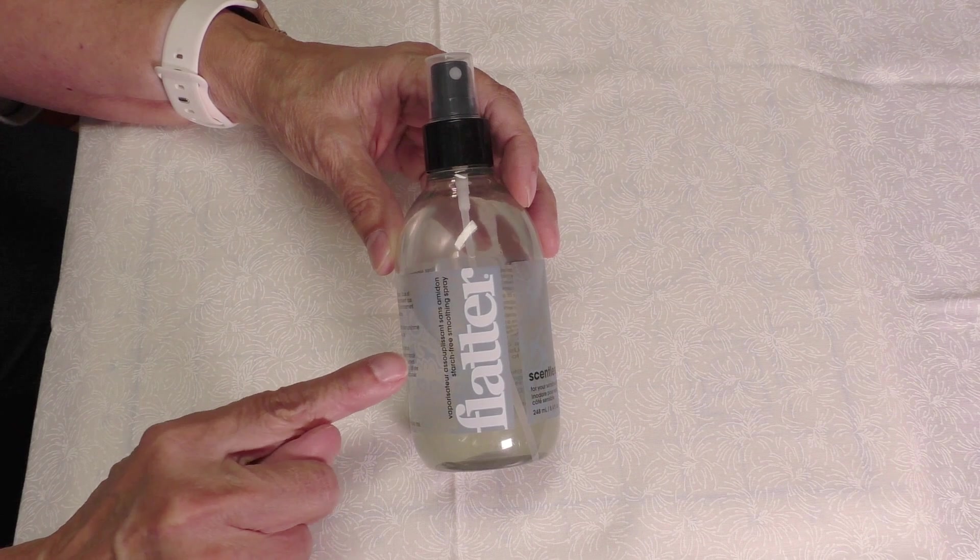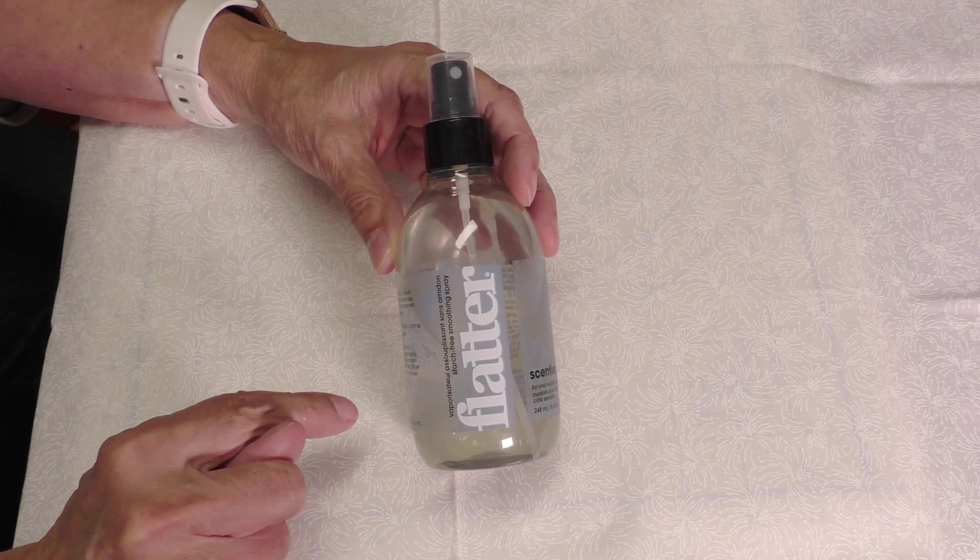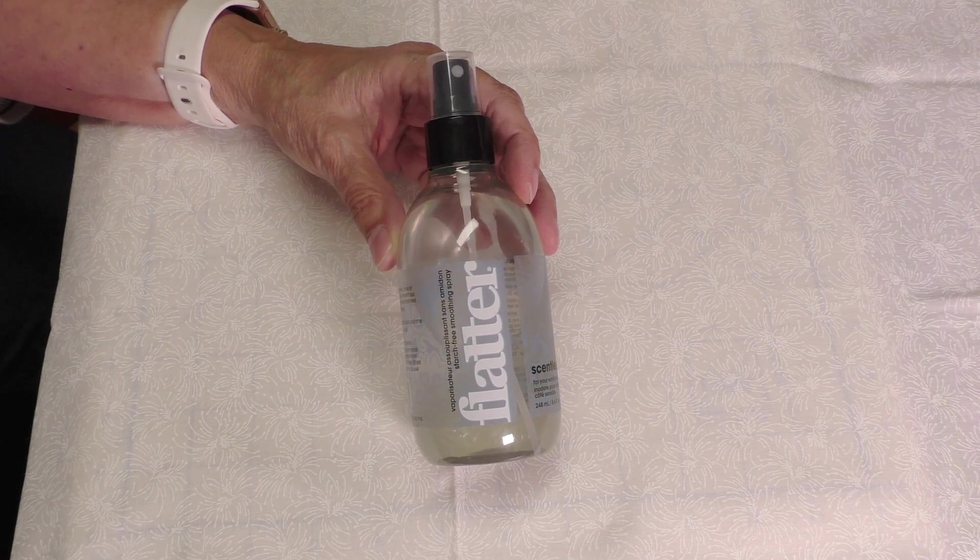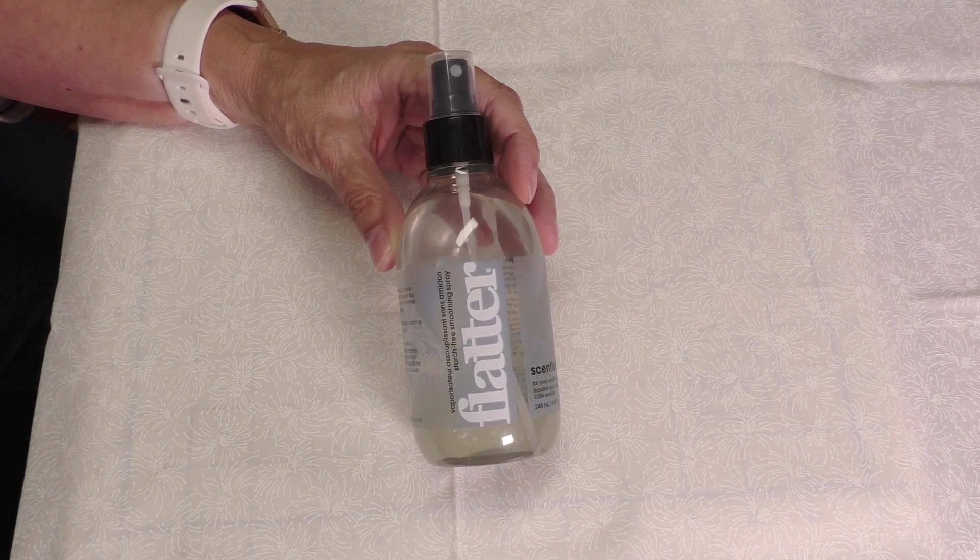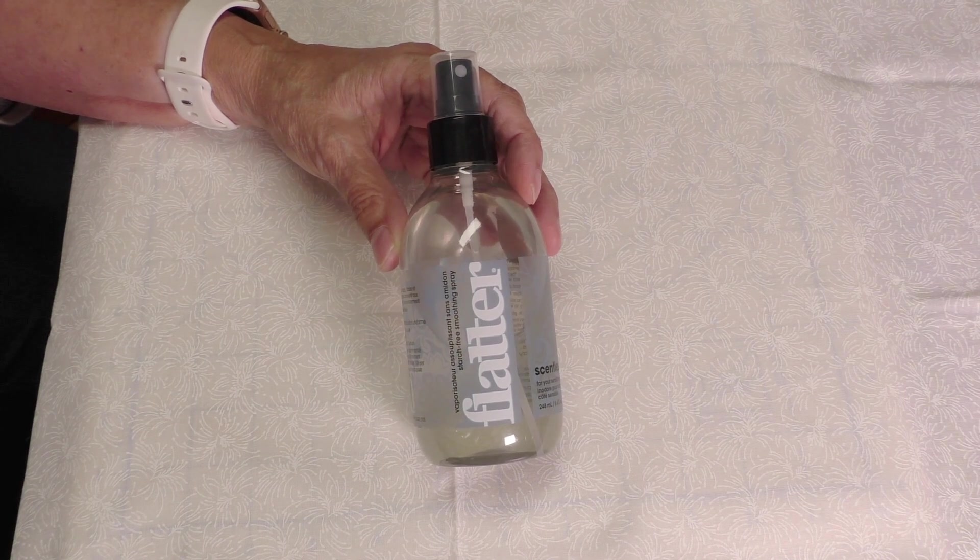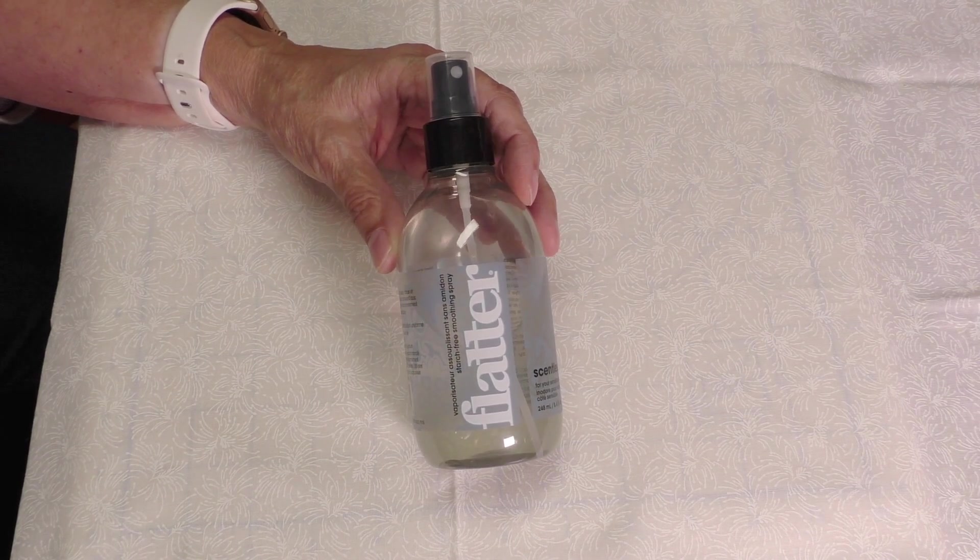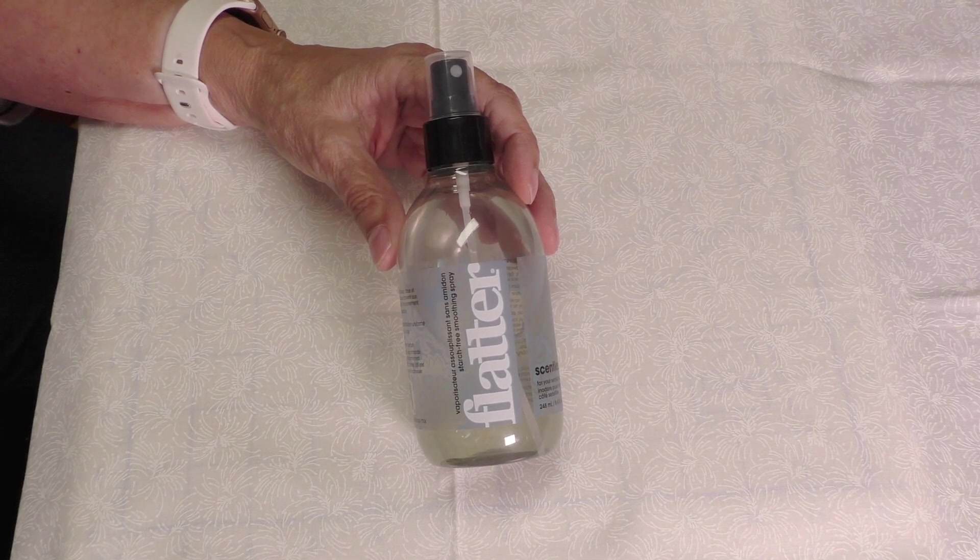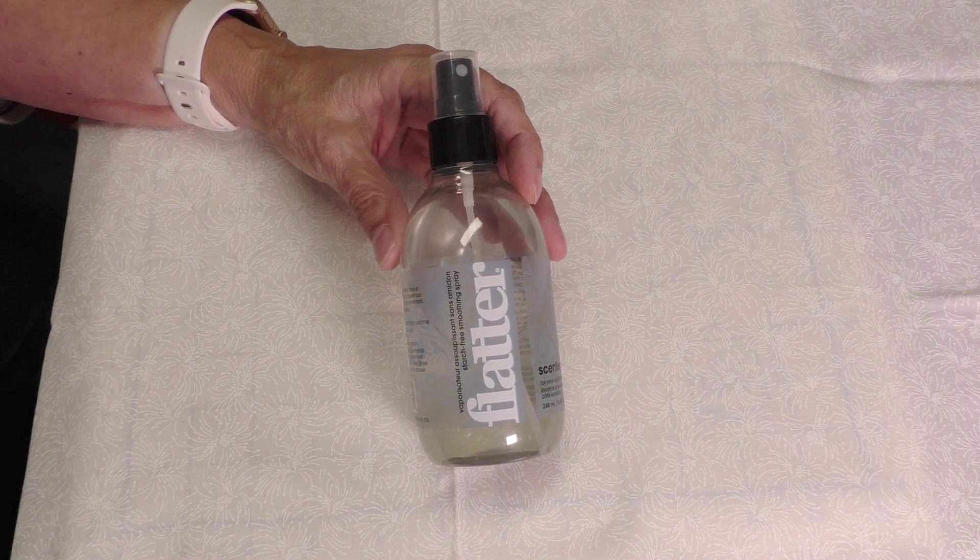Today's tip is about this pressing solution called Flatter. It was advertised on Shark Tank and quilters got a hold of it. It's basically a non-starch product, but it has all natural ingredients. It's supposed to flatten out those tough to flatten folds and creases in your fabrics. So I thought it was worth a try.